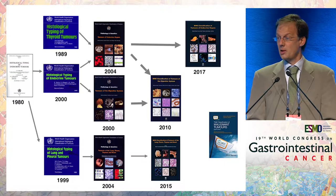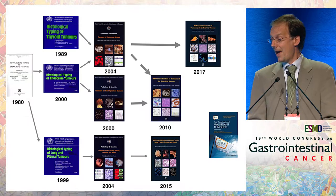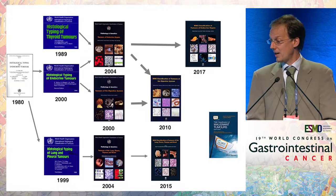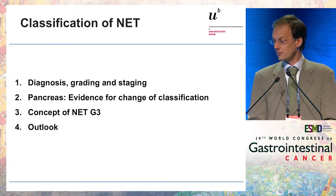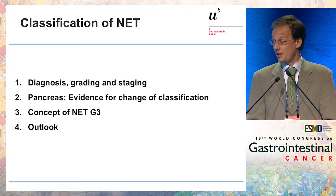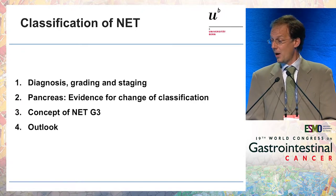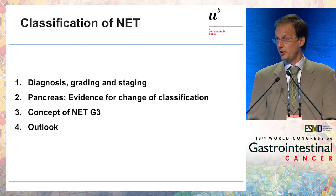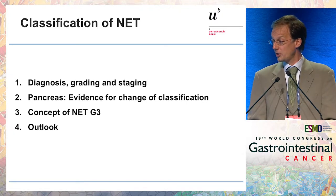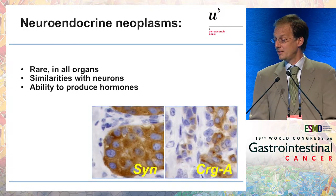Discriminating typical carcinoids, which largely correspond to G1 NET, but not exactly — atypical carcinoid and small cell cancer — so I will not cover this branch. I will briefly talk about staging, diagnosis, and grading, which is the basis of the WHO classification. I will show evidence for why we changed the classification again, introduce the NET G3 concept — the biggest news of this classification — and give the outlook.